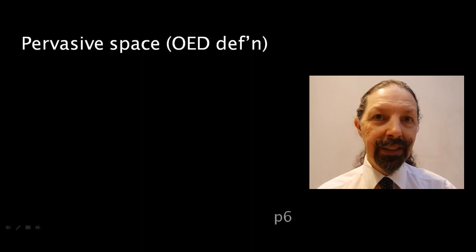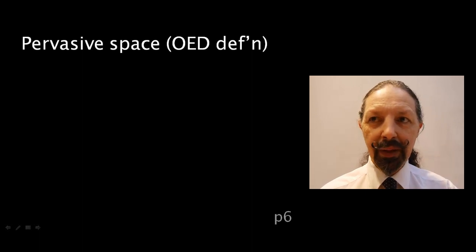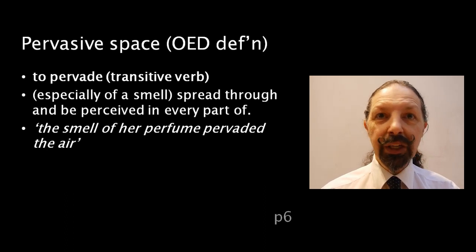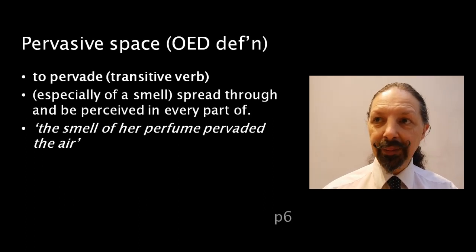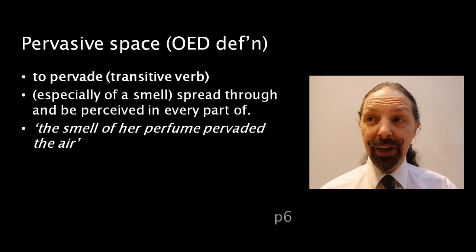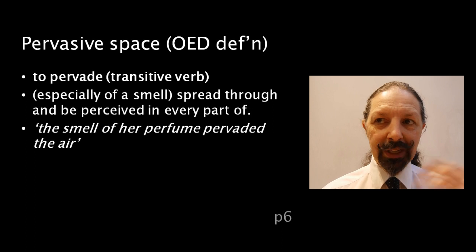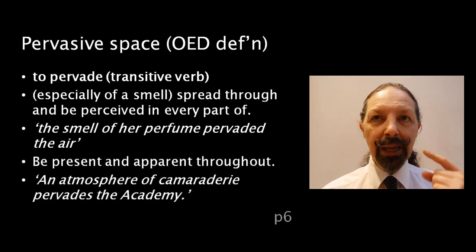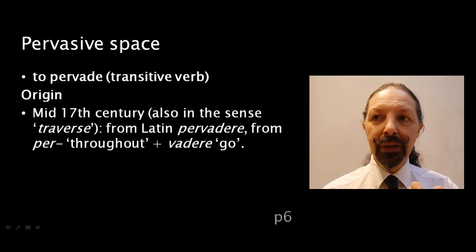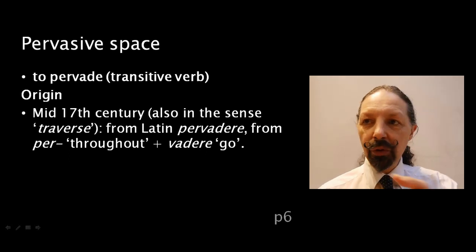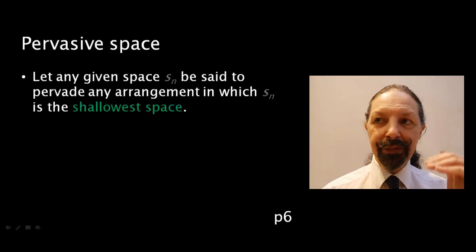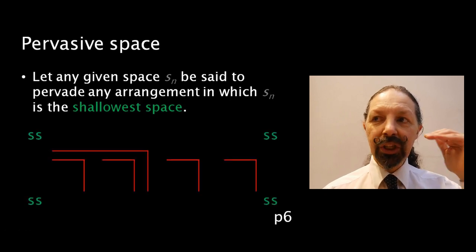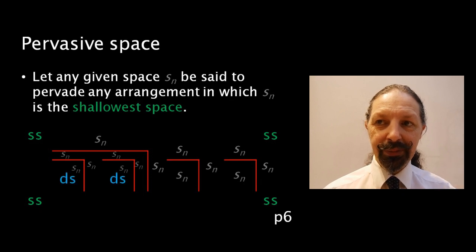He refers to this as pervasive space. What does pervasive mean? To pervade, as defined in the Oxford English Dictionary, which Spencer Brown was very fond of, he had a copy of the complete full work in his library and referred to it very frequently. In that, pervade is defined as something that spreads through and is perceived in every part of a surrounding space or expression in this case. It is present and apparent, and that comes from the Latin pervadere, which means to travel or go throughout something. So pervasive space is the space that pervades any arrangement, which has a shallowest space right down to the deepest space. It pervades it.